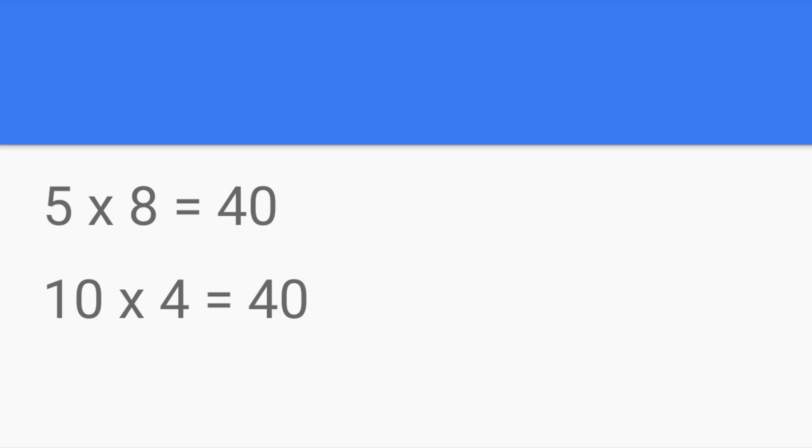We doubled one number and halved the other. Now, you might be thinking, but both of those multiplication problems are so easy. Why would I bother doubling and halving? And to that, I would say, what if we were trying to solve a more difficult problem such as 32 times 25?